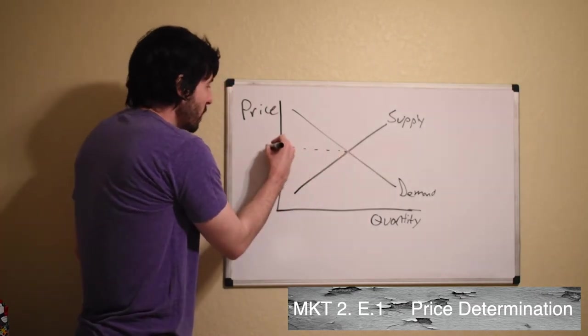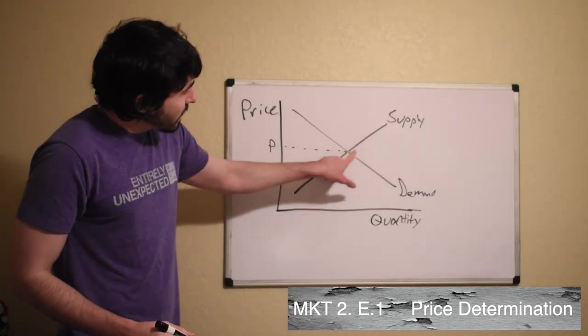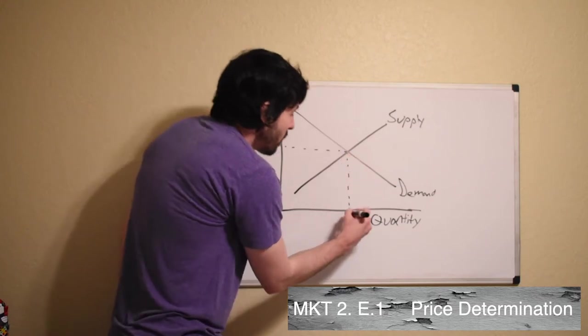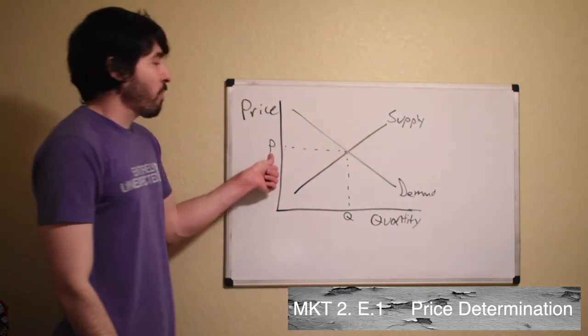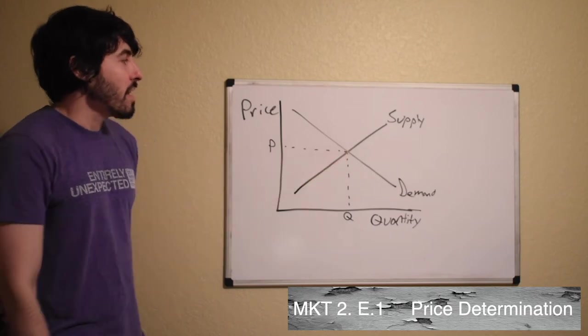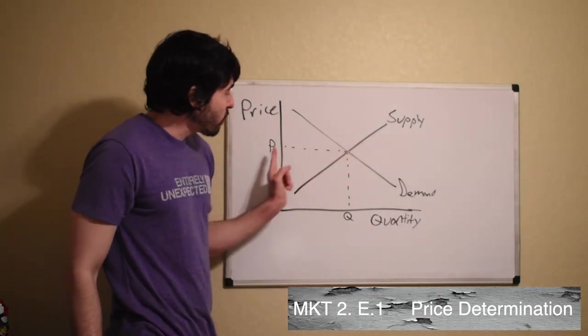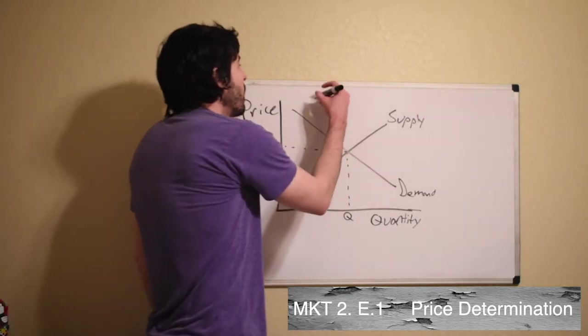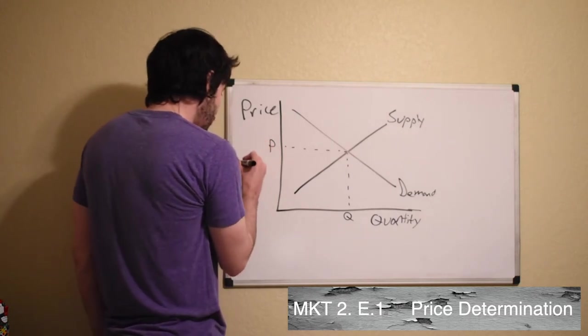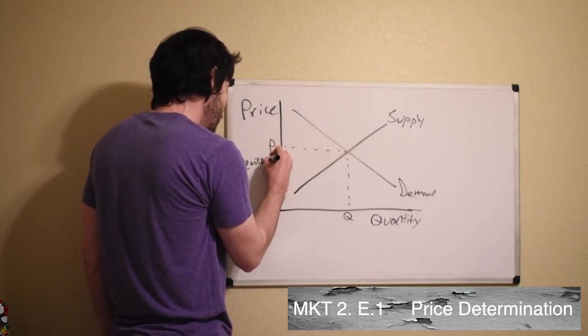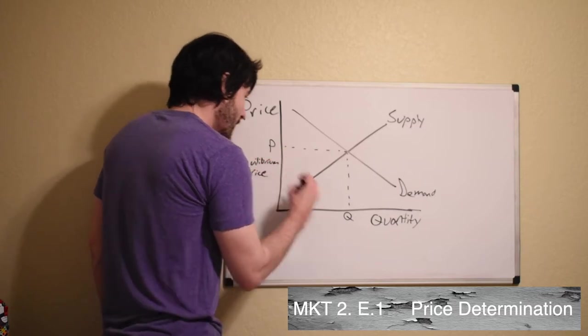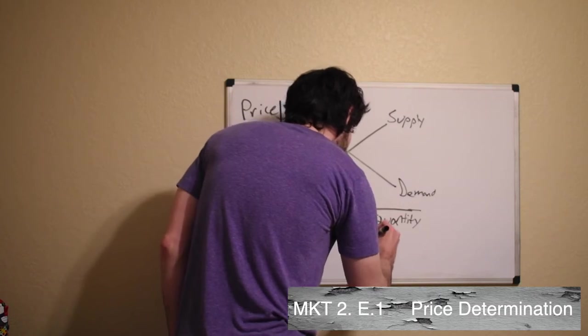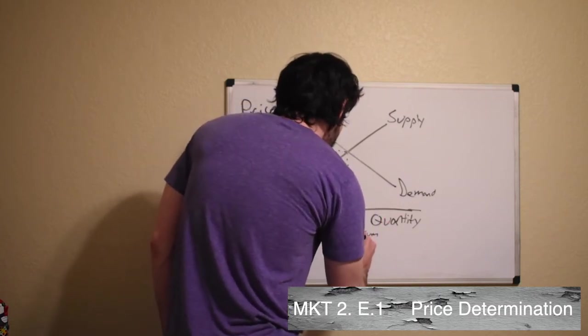When we hit equilibrium, that means our demand and our supply, our quantity demanded and our quantity supplied, are going to be equal for this price. Whatever the price is, this is what we're agreeing on right now. So the amount that the businesses want to produce for this price is equal to the amount that we want to purchase for that same price. So this is called equilibrium price and equilibrium quantity.